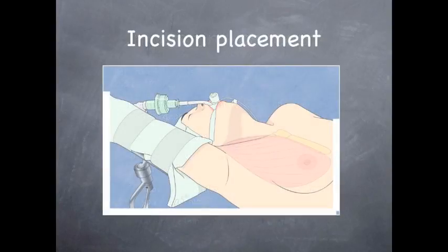For the endoscopic transaxillary approach, the arm is very carefully extended over the head to expose the axilla. The incision is then made in the axilla to allow access to the thyroid gland.